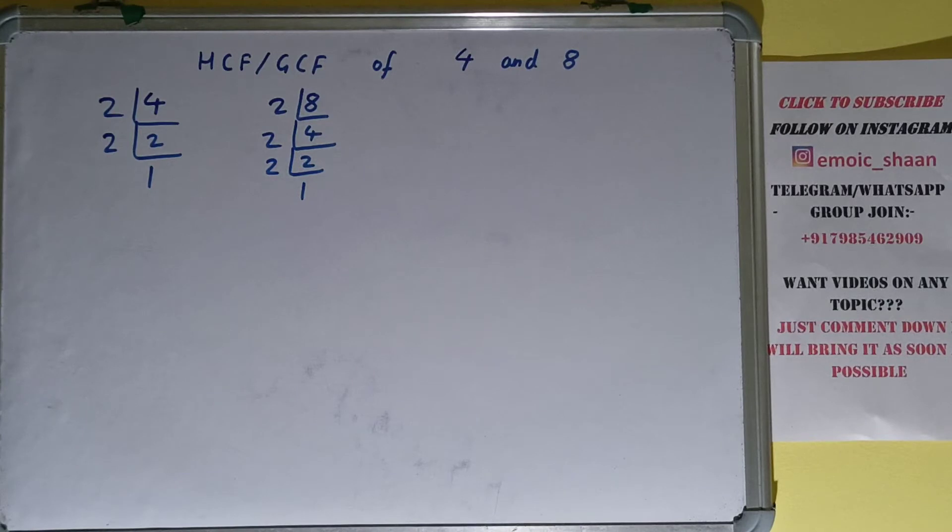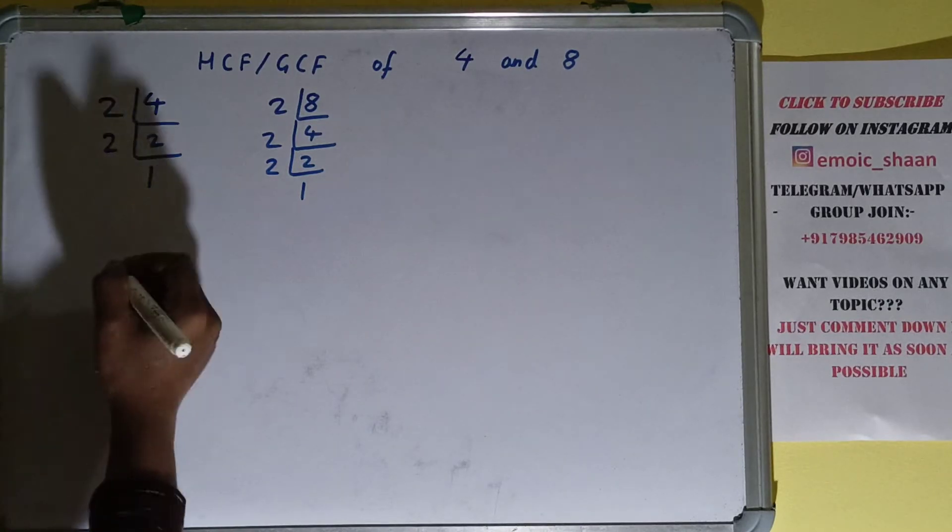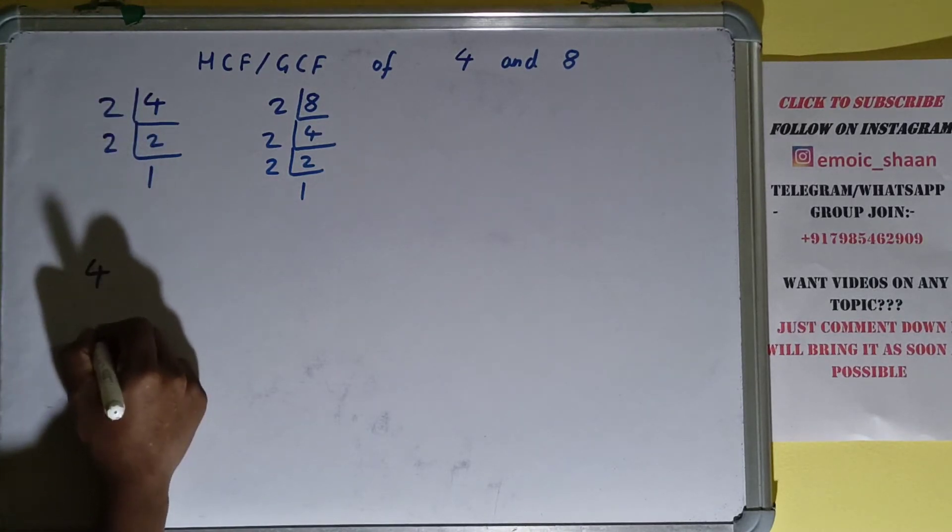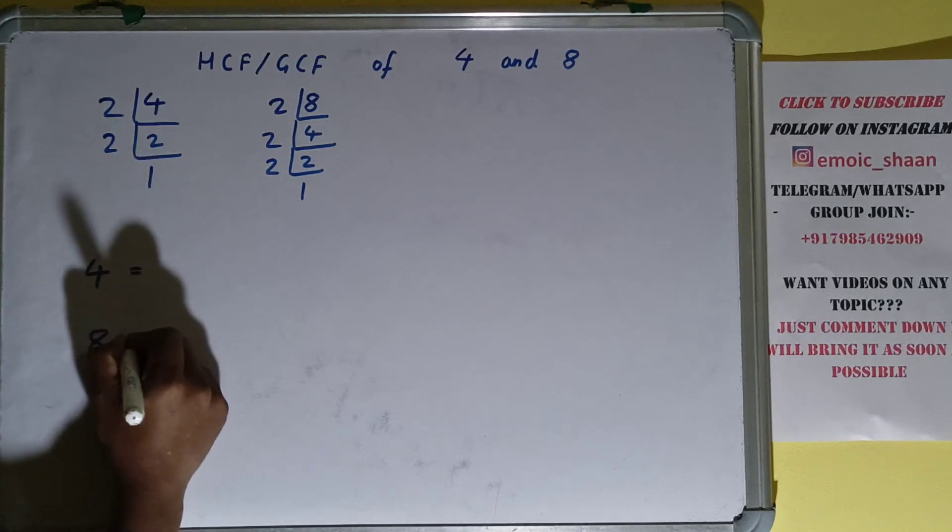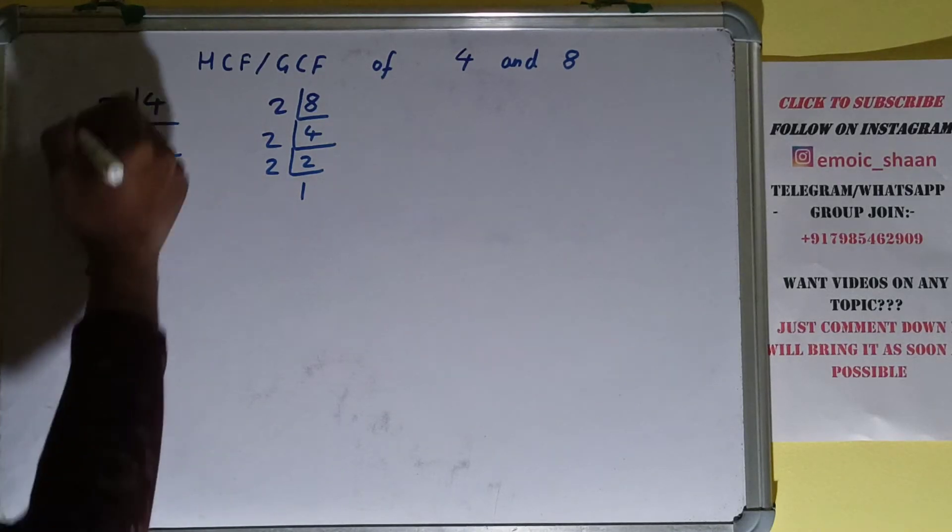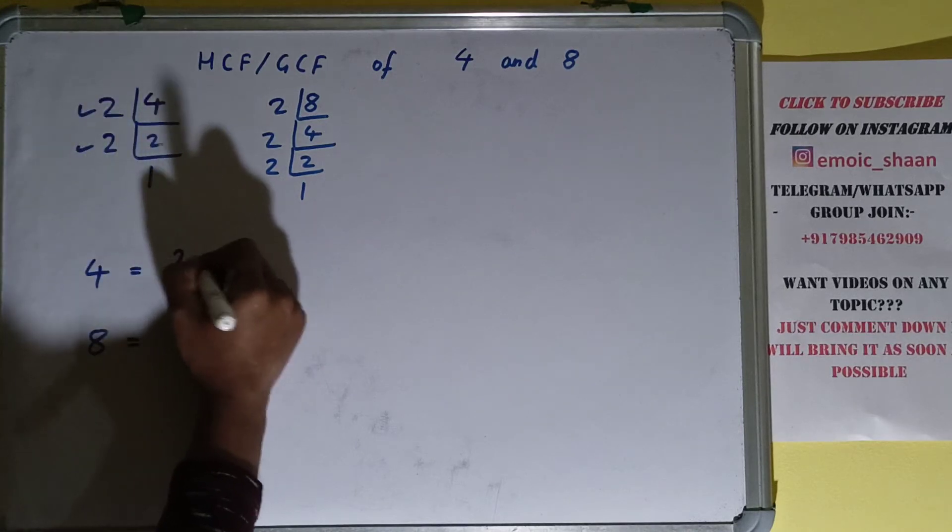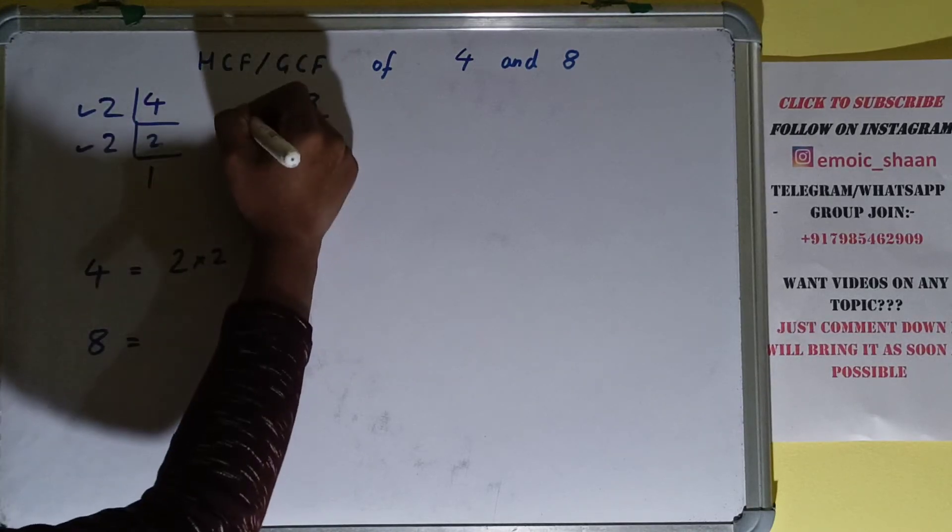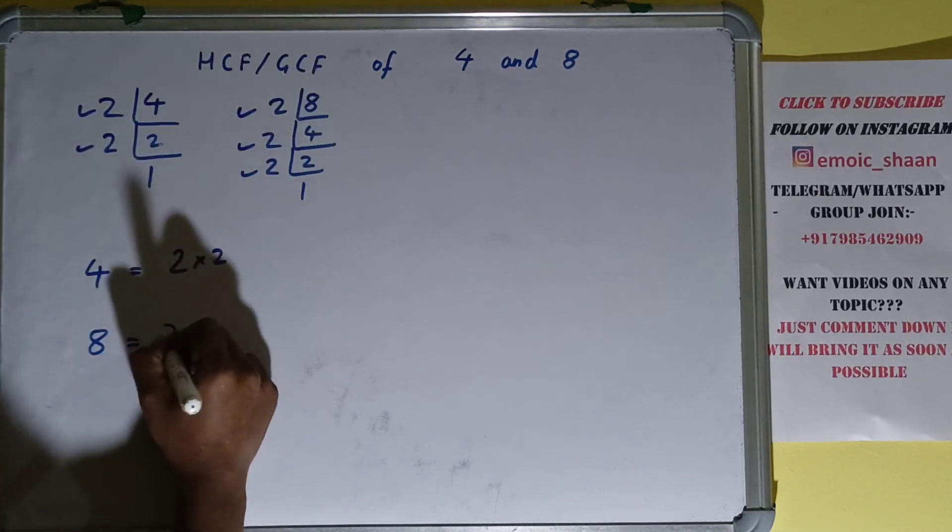The next thing we need to do is write down both the numbers with their respective factors. So for 4, the factors we got are 2 and 2, that is 2 times 2. For 8, what factors we got? 2 times 2 times 2.